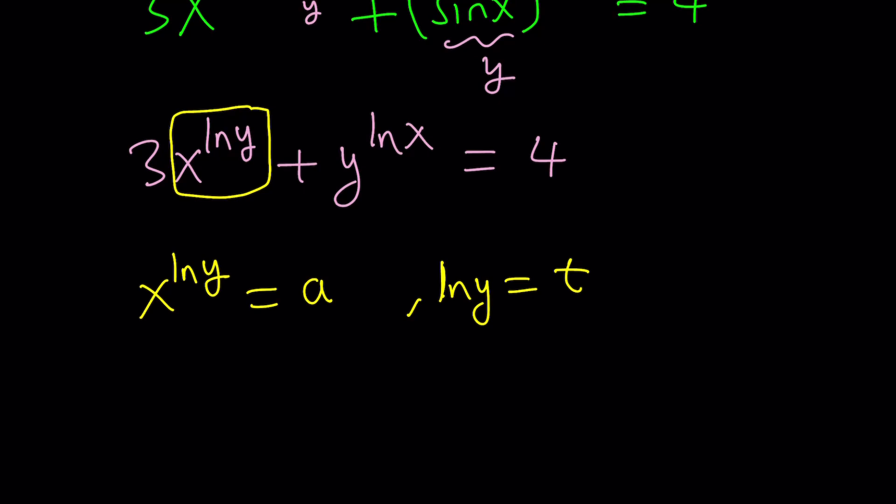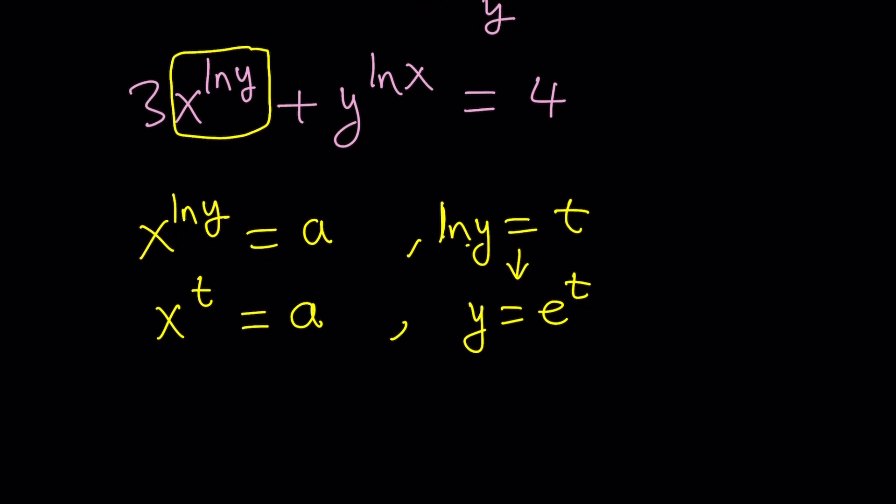So now, since ln y is named t, we can write this as x to the power t equals a as well. And since ln y is called t, from here, because the base is e, we can say y is equal to e to the power t. So you can make all these conversions. Hopefully you do know how logarithms work, but check out the definition of logs and then you'll get a better idea. So we have these equations which are somewhat pairwise equivalent.